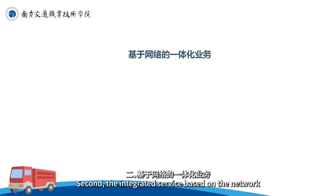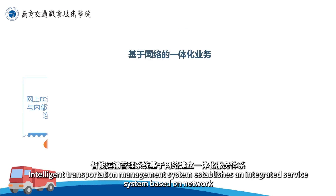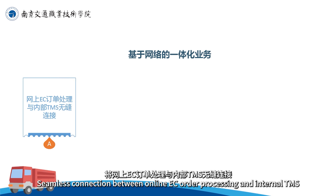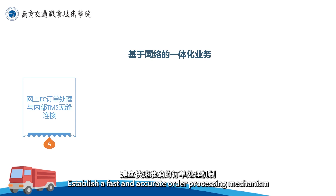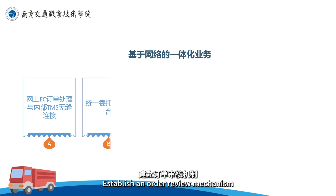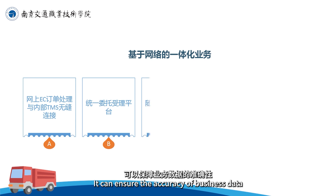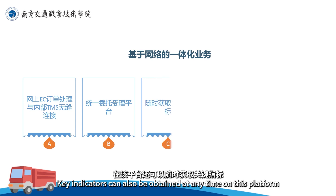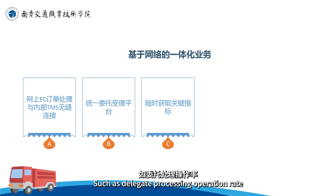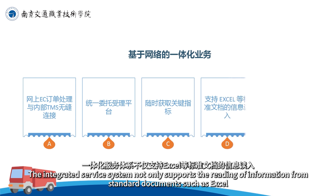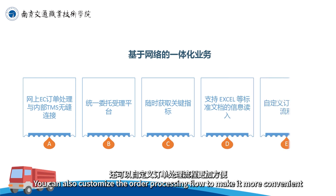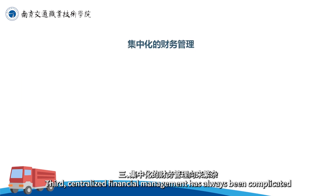基于网络的一体化业务：智能运输管理系统基于网络建立一体化服务体系，将网上EC订单处理与内部TMS无缝连接，建立快速准确的订单处理机制。在统一委托受理平台建立订单审核机制，可以保障业务数据的准确性，还可以随时获取关键指标，如委托处理搁托率、委托响应效率等。一体化服务体系不仅支持Excel等标准文档的信息读入，还可以自定义订单处理流程，更加方便。